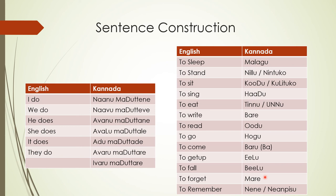It's so simple. For 'they': Awaru Maduttare — I replace Madu with Mare. 'They forget' — Awaru Marayuttare. 'They remember' — Awaru or Ivaru, depending on proximity — whether the person is close by or far away. Ivaru Maduttare — replace Madu with Nene. So, Ivaru Neneyuttare. Ivaru Nenapisuttare — 'they remember.' All you have to do is take any form, replace Madu with any of these verbs, and you will get a new sentence.